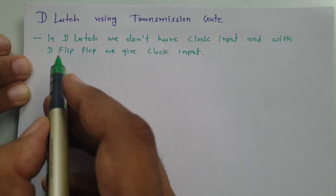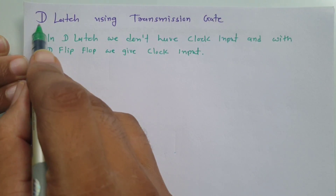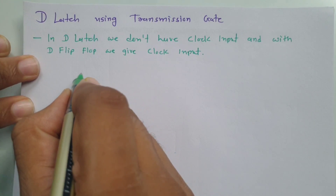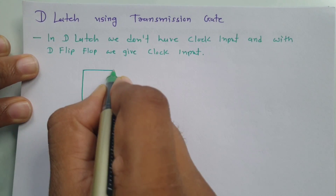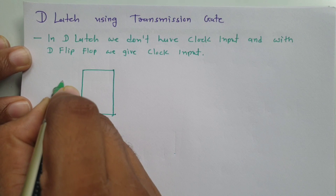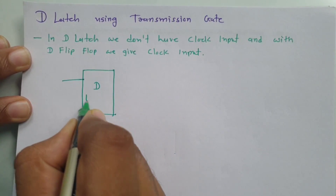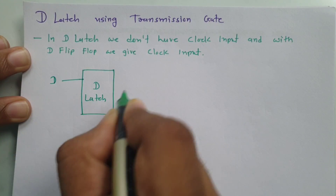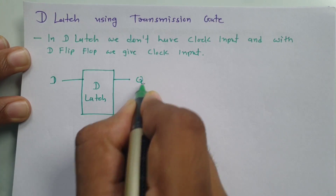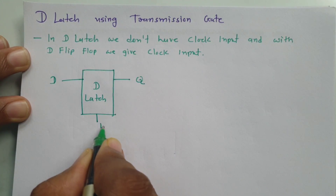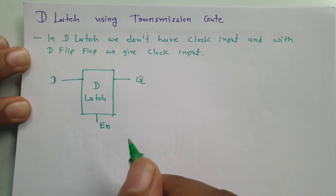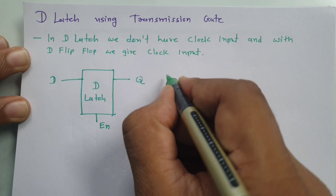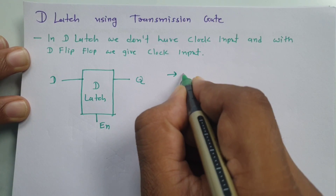Let us try to understand first what DLH is and how it is functioning. In DLH, there is only single input, and that is input D. My output is Q, and here we have enable signal.